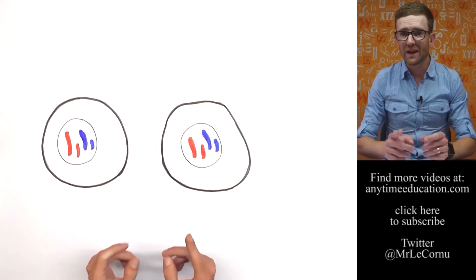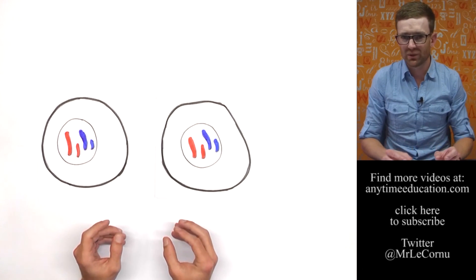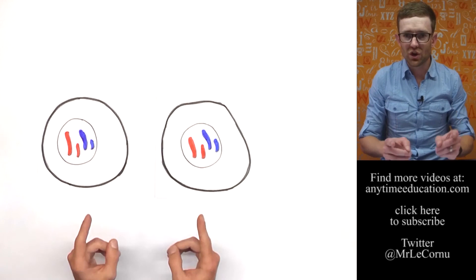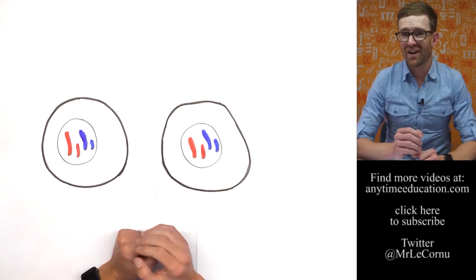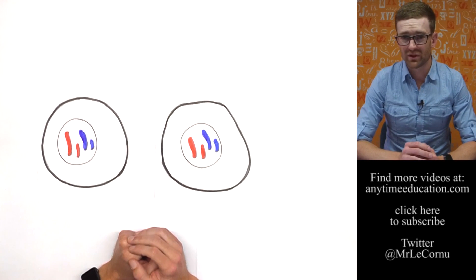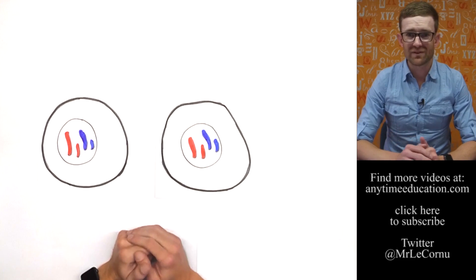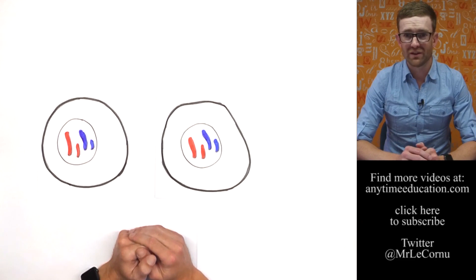In meiosis, we want to produce sex cells, and we don't want them to be identical to the parent cell. We actually want them to be different, and we want them to have half as many chromosomes. Of course, we're going to have to save meiosis for another video, and you can check that out for more information.